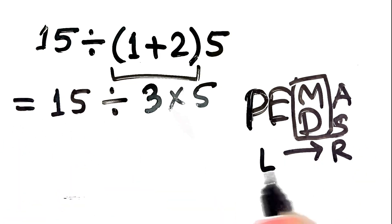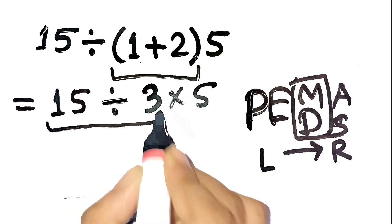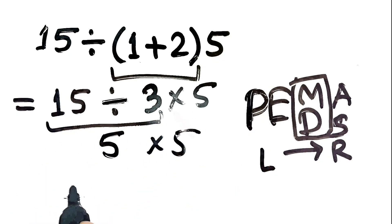Next, follow left to right for division and multiplication. First, 15 divided by 3 equals 5. Then 5 times 5 equals 25.